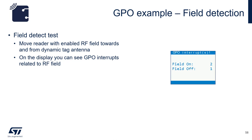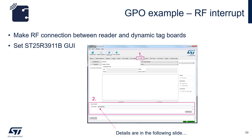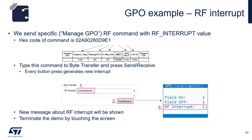Also notice the distance at which detection occurs. Make sure the reader and tag are in RF connection, then click ISO 15693 and configuration to confirm the RF field is on. Proceed to put in the manage GPO command with the RF interrupt value, enter the value in the box, and click the Send/Receive button. You will see that the board detects the GPO manipulation command coming from the reader.